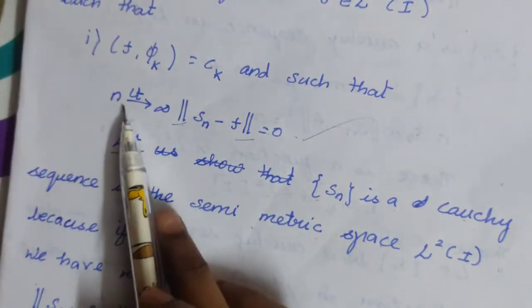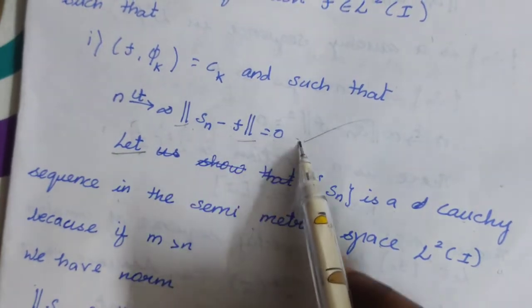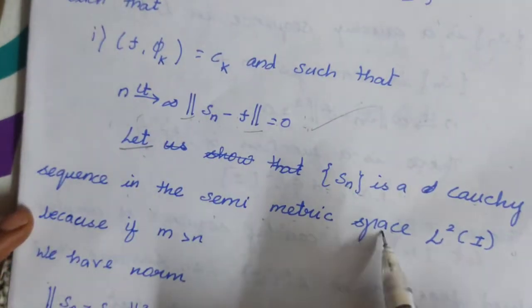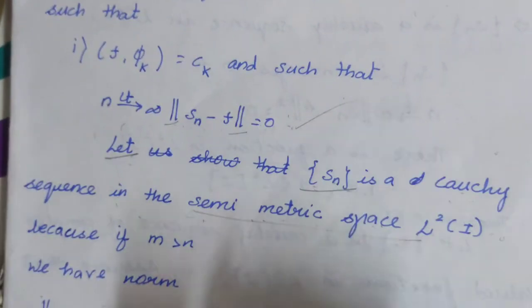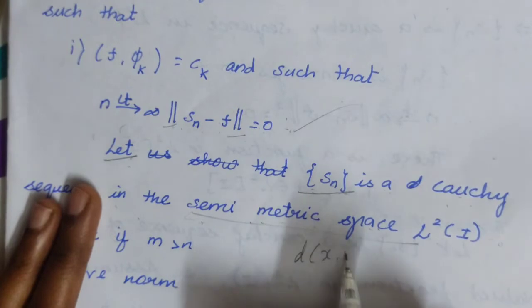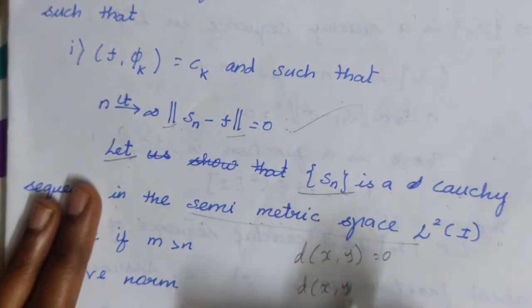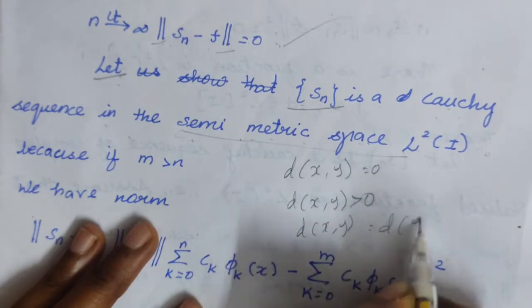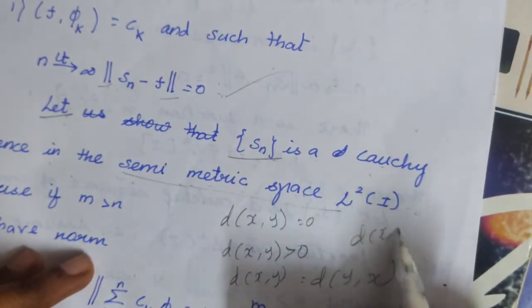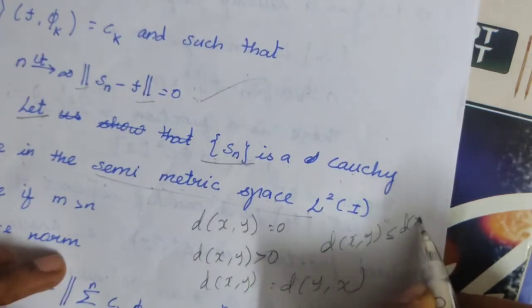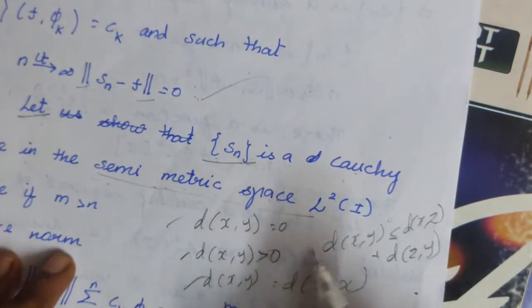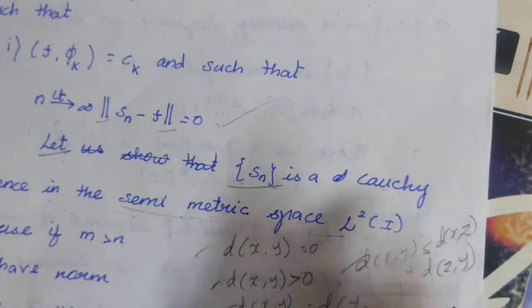To prove this, we show that the sequence Sₙ is a Cauchy sequence in the semi-metric space L²(I). A semi-metric space satisfies four conditions: d(x,y) equal to 0; d(x,y) greater than 0; d(x,y) equal to d(y,x); and d(x,y) plus d(z,y) — the four conditions are satisfied. If we prove that Sₙ is a Cauchy sequence in this semi-metric space, that is sufficient.